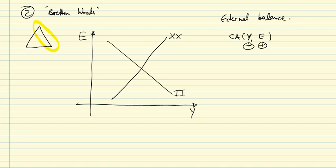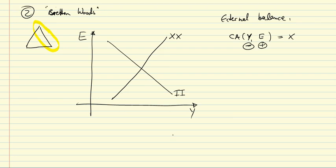If X is the target level of the current account that authorities would like to achieve for external balance, then a higher exchange rate — leading to higher exports — must be offset by higher domestic spending so that imports increase in order to maintain the current account at this target level. This gives the XX curve its positive slope.